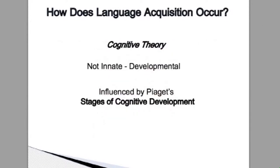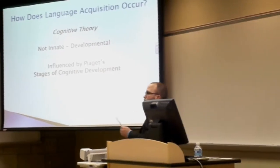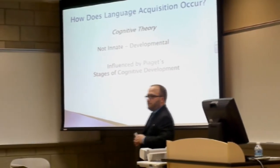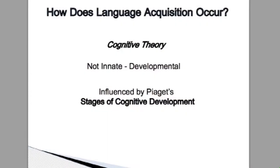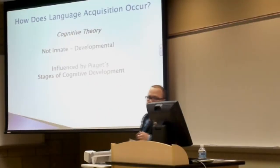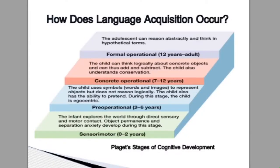Now I'm going to talk about the cognitive theory. The cognitive theory of language acquisition sort of contradicts the innate view, and it says that language development is not innate — it's developmental. What they propose is that it is influenced by kids' stages of cognitive development. This is a blueprint that basically tells you how students progress through four key stages of language or cognitive development.